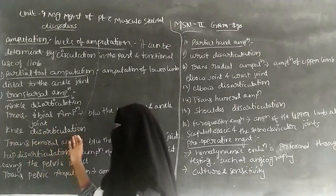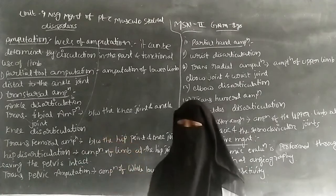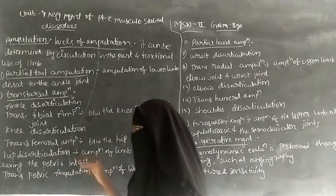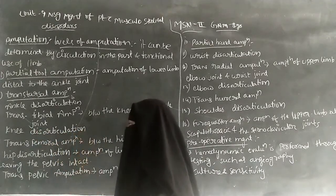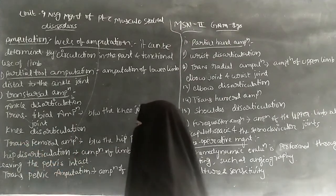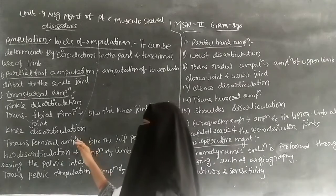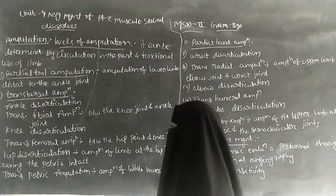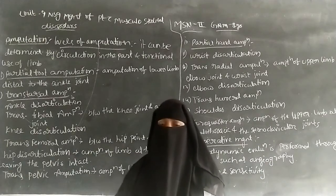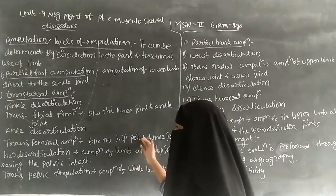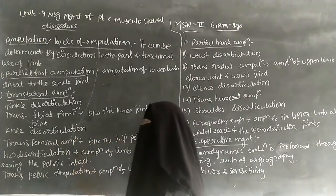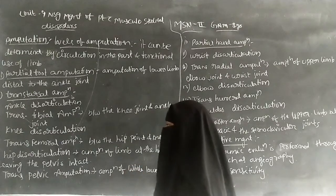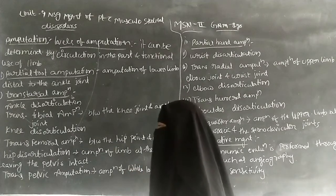Next is knee disarticulation, where up to the knee joint the total limb has to be removed. After that is trans-femoral amputation, where the amputation is done between the hip joint and the knee joint — the middle part between these two joints is removed in trans-femoral amputation.